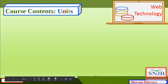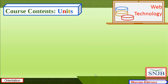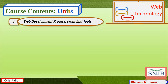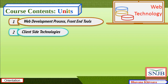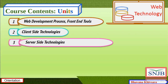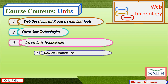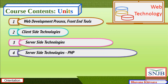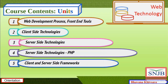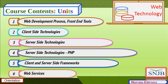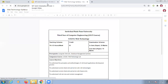There are six units in total. Unit 1: Web Development Process and Front-End Tools. Unit 2: Client-Side Technologies. Unit 3: Server-Side Technologies. Unit 4: Server-Side Technology more specifically linked to PHP only. Unit 5: Client and Server-Side Frameworks — frameworks for both. Unit 6: Different Web Services.